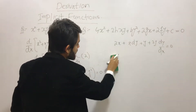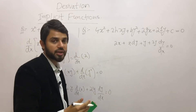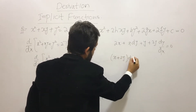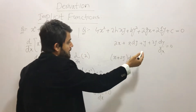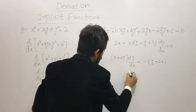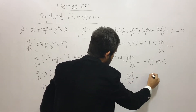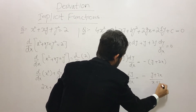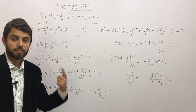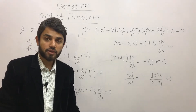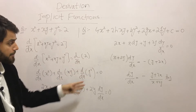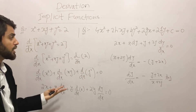Now we collect all dy/dx terms on the left-hand side. Factoring out dy/dx gives (x + 2y)·(dy/dx). Moving the remaining terms to the right-hand side gives −(y + 2x). So the answer is dy/dx = −(y + 2x) / (x + 2y). This is how you find the derivative of an implicit function using the power and product rules.